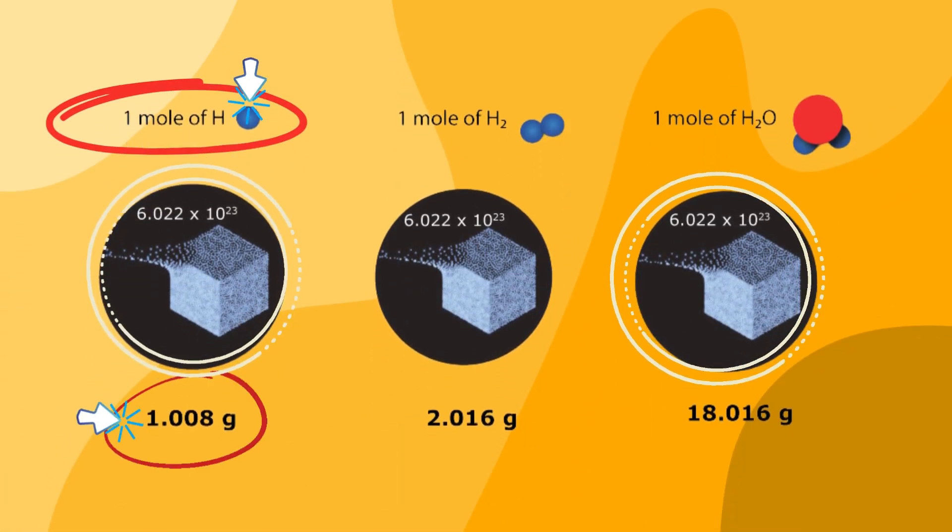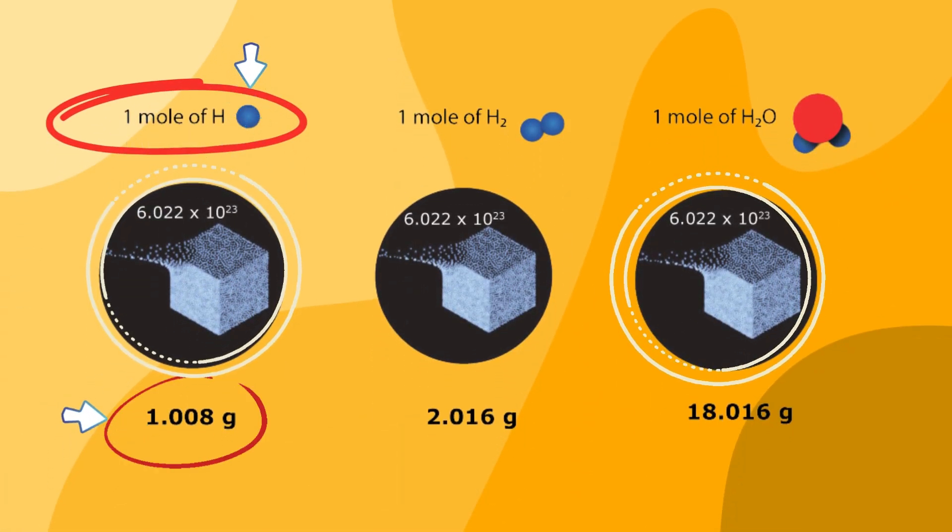One mole of hydrogen atom contains 6.022 into 10 to the power of 23 hydrogen atoms equals 1.008 gram.